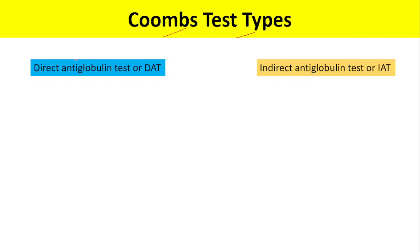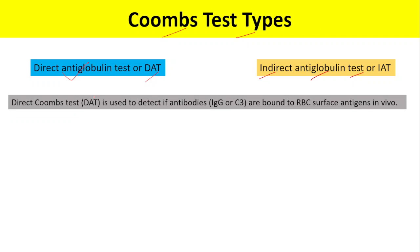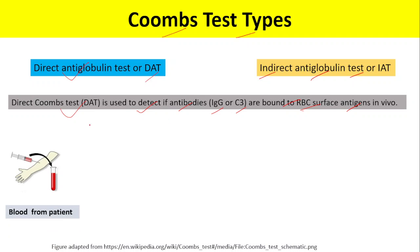There are two different types of Coombs test. One is the Direct Anti-Globulin Test, or DAT, and the other is the Indirect Anti-Globulin Test, or IAT. In the direct Coombs test, we use this test to detect if antibodies — IgG or C3 — are bound to the RBC surface antigens in vivo.